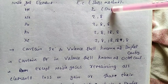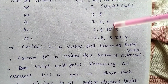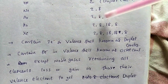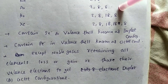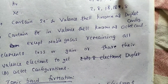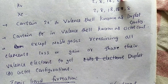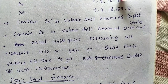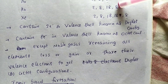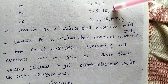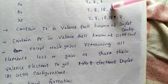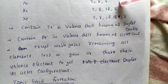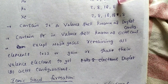Due to their duplette and octet configurations, noble gas elements are stable, so they do not participate in chemical reactions — they are chemically inert. Therefore, they are also called inert gas elements. Because they do not participate in chemical reactions, their valences are zero, and so they are also known as zero group elements.